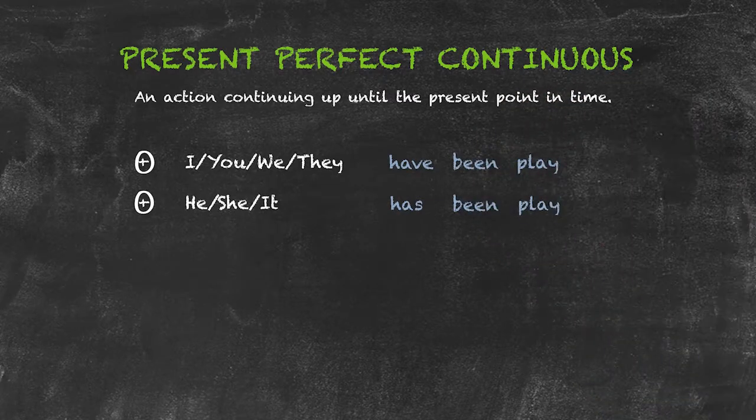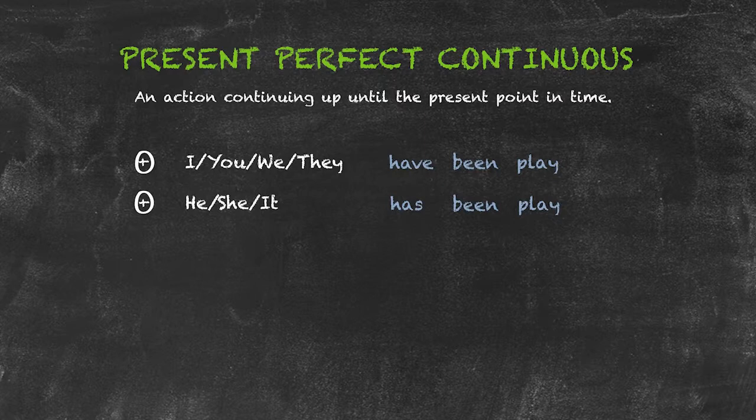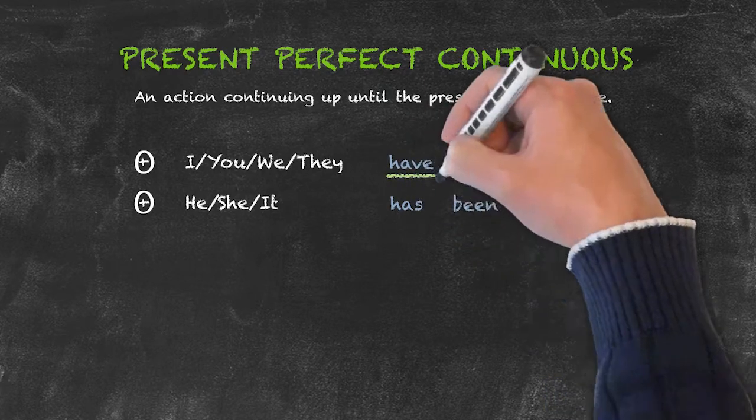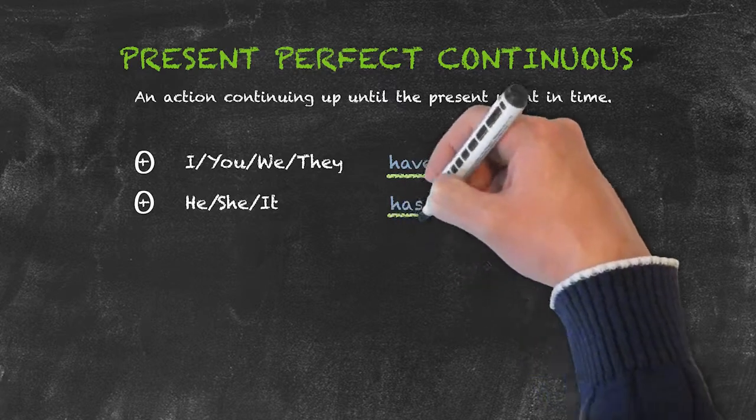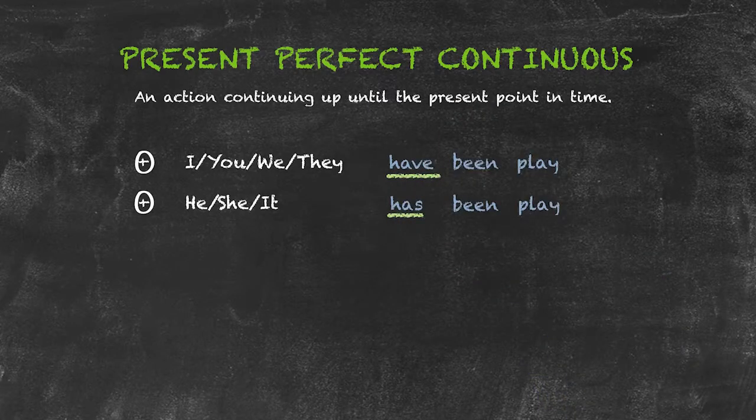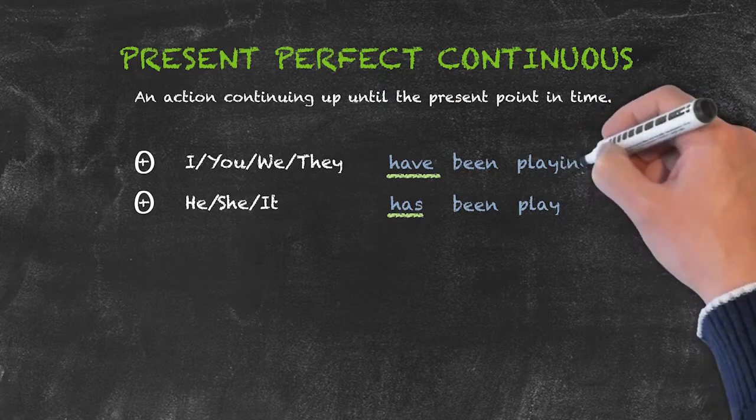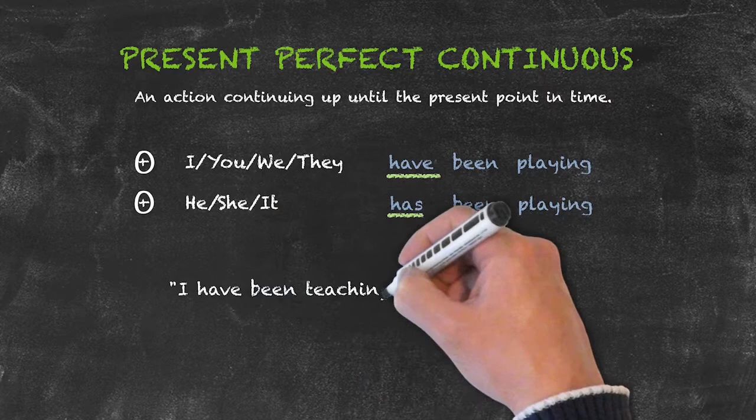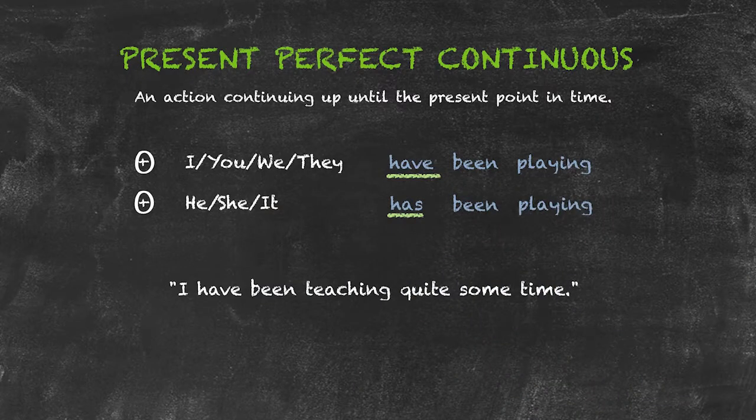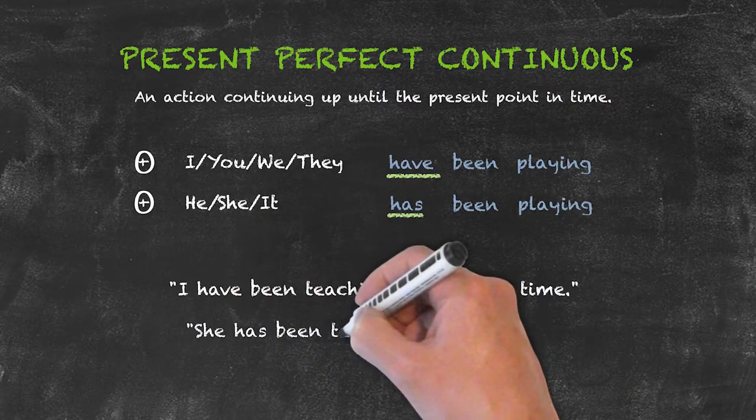For our subjects I, you, we, and they, we leave have as have. For he, she, and it, we conjugate it to has. Because it's a continuous tense, of course we need to use the verb plus ing. This results in sentences such as I have been teaching for quite some time, or she has been teaching for 15 years.